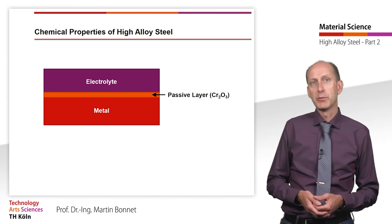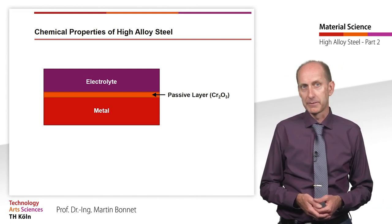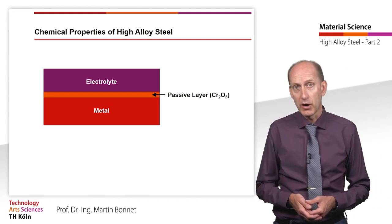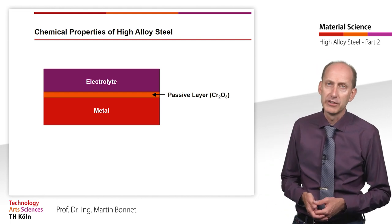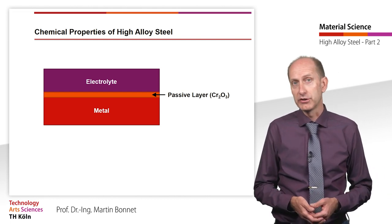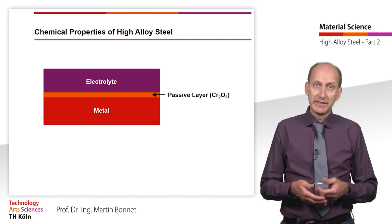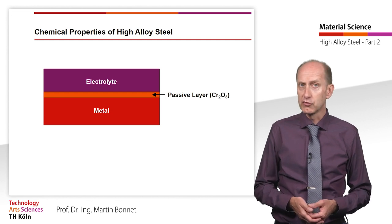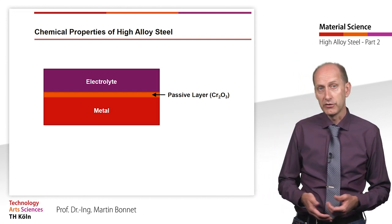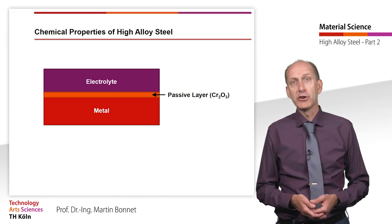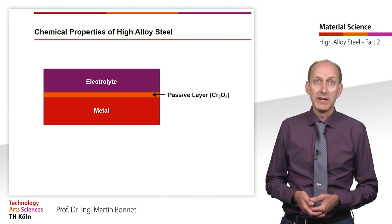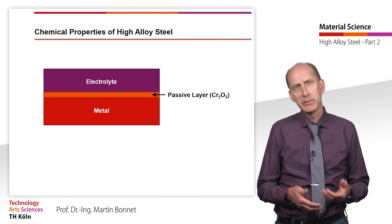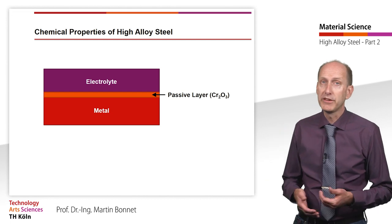Therefore, the chromium content should generally be above 13%. Above this chromium content, a chromium oxide layer of a few nanometers thickness forms under almost all ambient conditions. This dense, tough and adherent thin layer makes the steel corrosion resistant, at least under atmospheric conditions. After a mechanical injury, in the presence of oxygen, this protective layer is rebuilt in about 10 milliseconds. This is called repassivation.